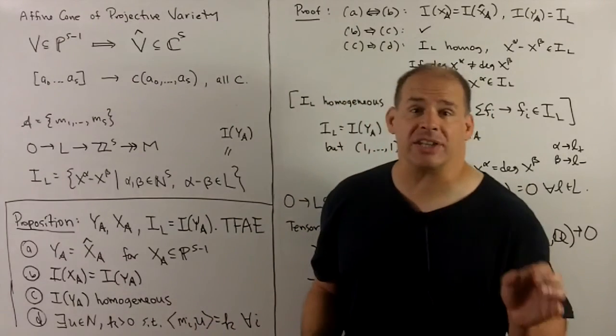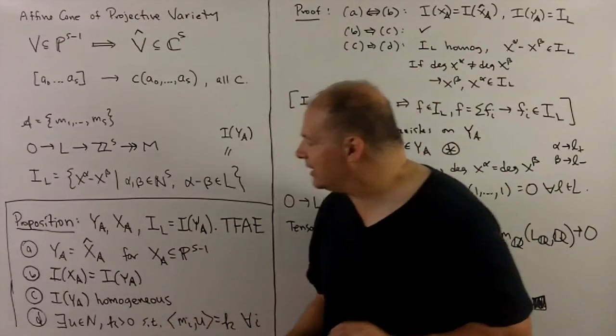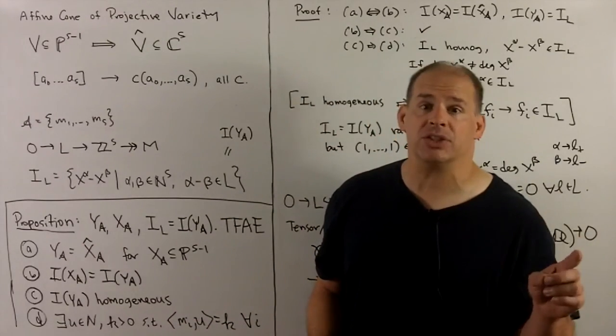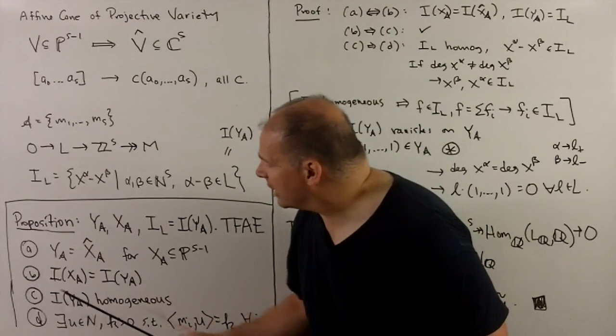Condition C: the ideal for yA is homogeneous, which means it's generated by homogeneous elements. And D, a technical condition: there exists a one-parameter subgroup u and a positive integer k.